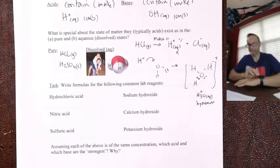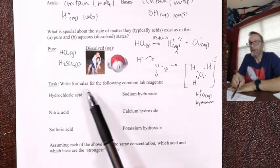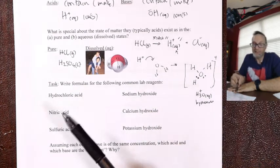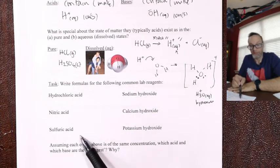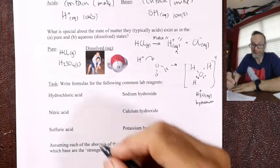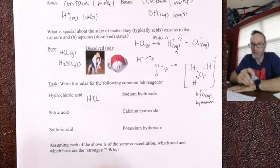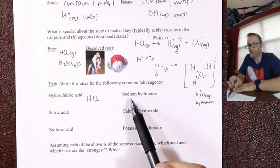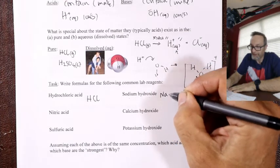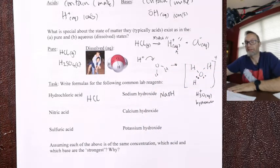You should be able to write the names and formulas of any acid and base now. For example: hydrochloric acid is H⁺ and Cl⁻, charge +1 and −1, giving HCl. Sodium hydroxide is Na⁺ and OH⁻, giving NaOH.